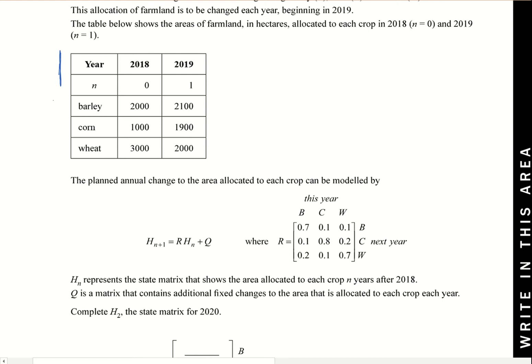The planned annual change allocated to each crop can be modeled by this. We've seen this before - this is essentially sn plus one equals t for transition matrix times sn plus q, the forcing matrix, depending what textbook you've used. So before we start anything else, keep in mind this is t.